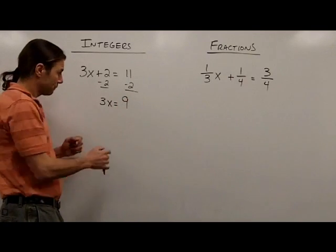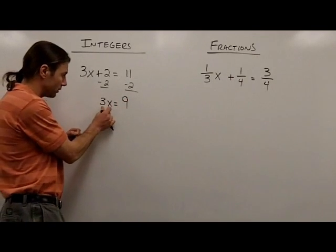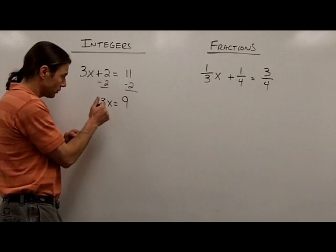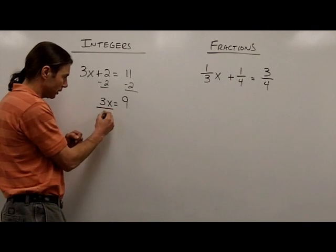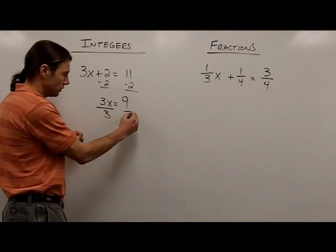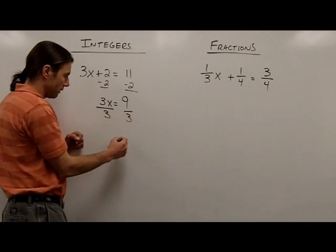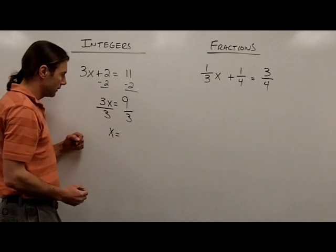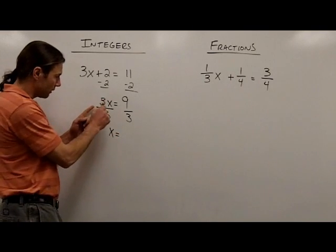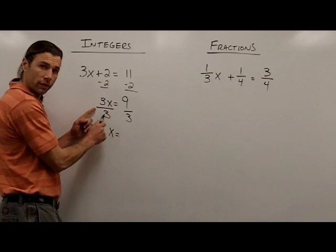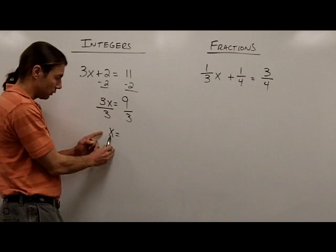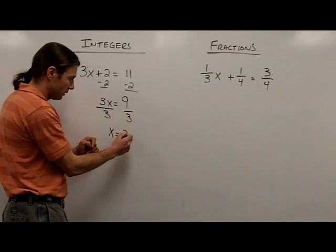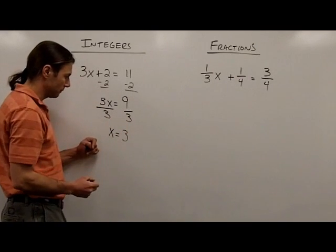One last step: I need to undo the multiplication by 3. To undo multiplication, I'm going to use division. So I divide both sides by 3. On the left side, 3 divided by 3 is 1, so I'm left with 1x. On the right side, 9 divided by 3 is 3.